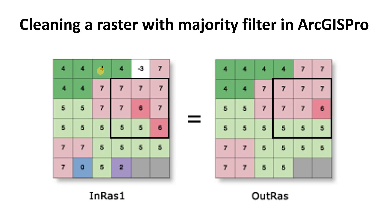In this video I'm going to show you how to clean up a raster using the majority filter in ArcGIS Pro. One thing to know is this is typically done on a single band raster and typically on integer data, not on floating point data. A good example of this is a classified image where each pixel has been classified into a class and those classes are represented by specific integer values.